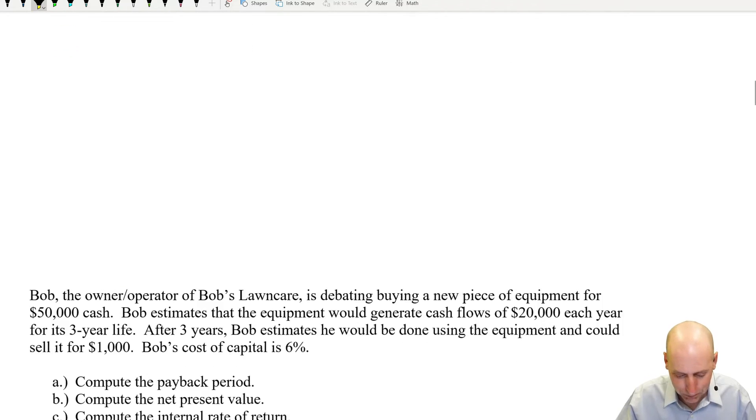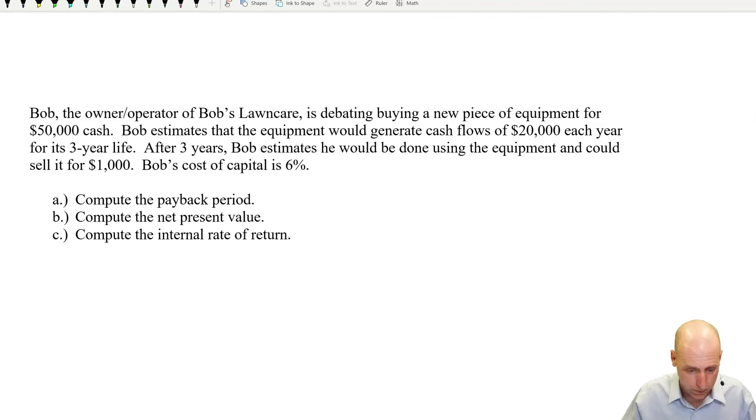Let's get into it with an example. Bob, the owner operator of Bob's lawn care, is debating buying a new piece of equipment for $50,000 cash. This is very typical, a corporate finance problem. We're thinking of buying a new piece of equipment and we're going to use it for years and years. Should we buy it or not? Bob estimates that the equipment would generate cash flows of $20,000 each year.